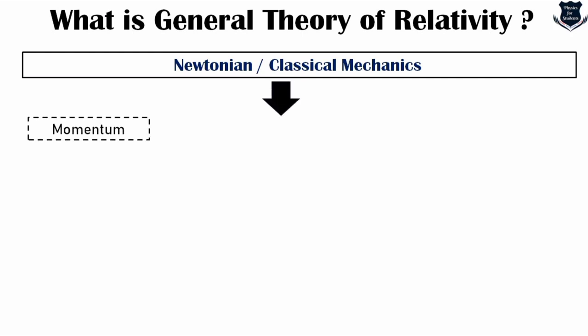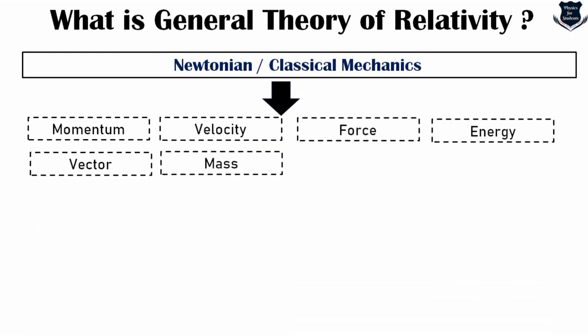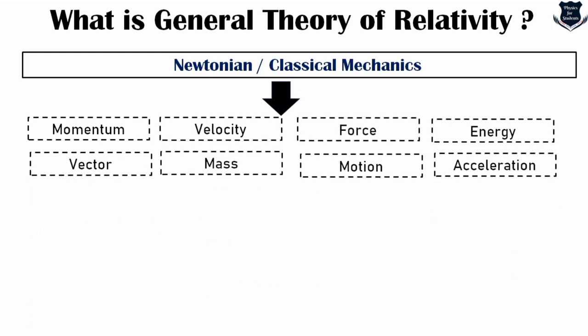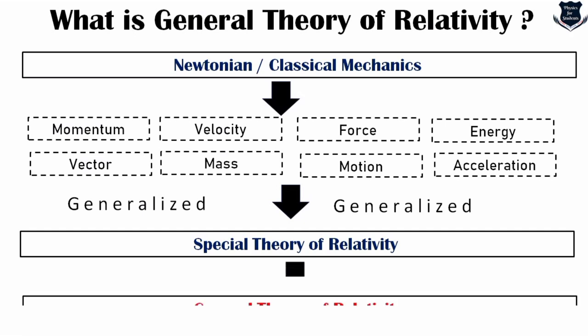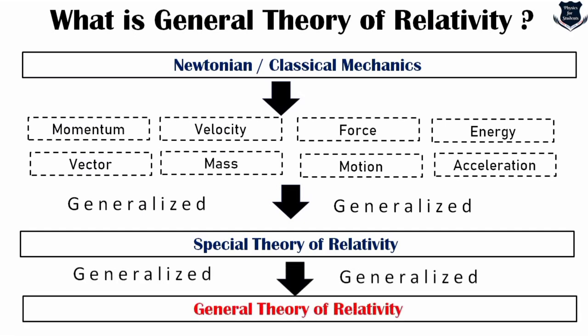Newtonian or classical mechanics contains important concepts like momentum, velocity, force, energy, vectors, mass, motion, and acceleration. These are generalized in the form of special theory of relativity. I have made a video showing how classical mechanics laws are extended to special theory, and special theory is further generalized into general theory of relativity — showing the overall schematic diagram of how Newtonian mechanics factors are generalized step by step.